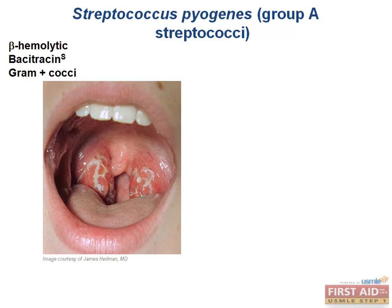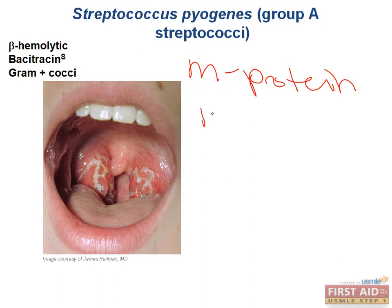M protein is the virulence factor for strep pyogenes. Our immune systems produce antibodies against M protein to fight the infection, but these antibodies are dangerous because they can cross-react against the same M protein found in cardiac muscle tissue — a phenomenon known as molecular mimicry. This leads to damage of heart valves such as the mitral valve and can cause rheumatic fever, which is diagnosed with the Jones criteria.